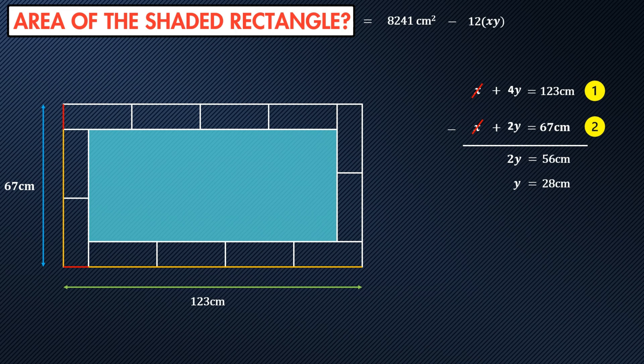Now that we have a value for y, we can pop that back into one of the equations. Let's say equation two looks to be the easiest. So now we have x plus 2y equals 67 where y is 28. We can simplify that. x plus 56 equals 67. Solve for x by subtracting 56 from both sides. And now we have x equals 11.